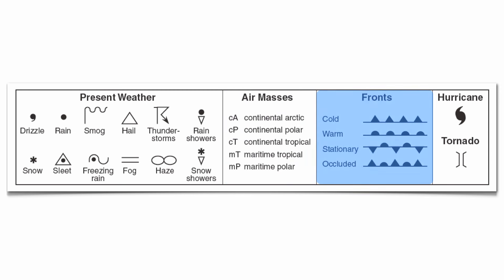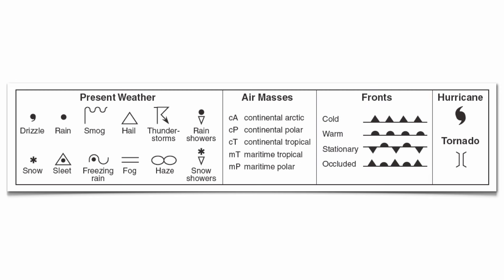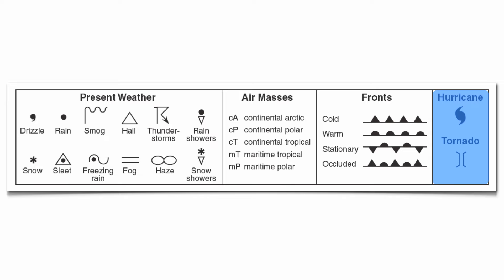Then you have your different fronts: cold, warm, stationary, and occluded. And then your hurricane and tornado symbols as well. So a lot of information at the bottom there. But for the station models, present weather is the one you're going to really want to focus on.